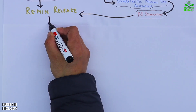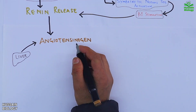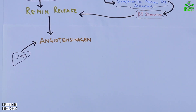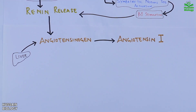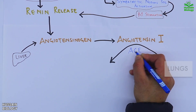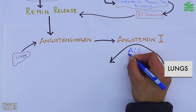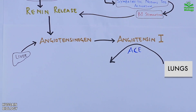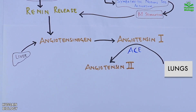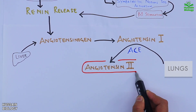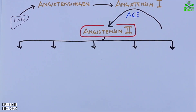From the liver we get the angiotensinogen enzyme, which is acted upon by the activated renin and cleaved into angiotensin 1, as shown in the diagram. Then this angiotensin 1 is acted upon by the ACE enzyme coming from the lungs, and we get angiotensin 2.